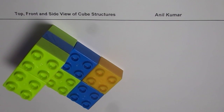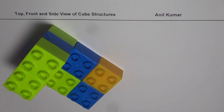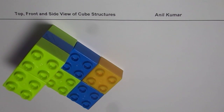The side views from left and right are exactly the same, so when you draw them you have to draw them exactly the same. Pause the video, sketch the top, front, and side views, then check your answer with mine. Remember to show the change in depth with a bold line.